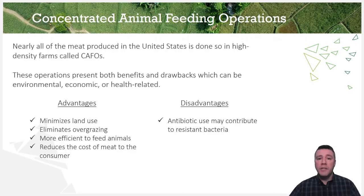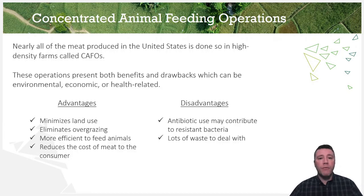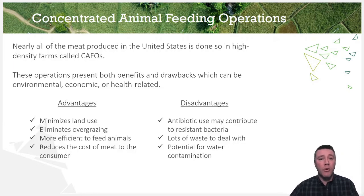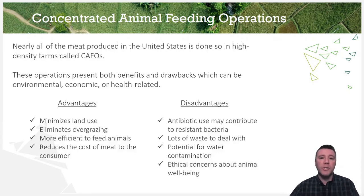Another disadvantage: what do you do with all their waste? When a farm has thousands or tens of thousands of animals, their manure must be disposed of properly, so as to avoid issues like surface water and groundwater contamination. Another disadvantage, and the most difficult to quantify, relates to animal well-being. There are obvious ethical questions and concerns that could be raised around keeping animals in habitats like these.